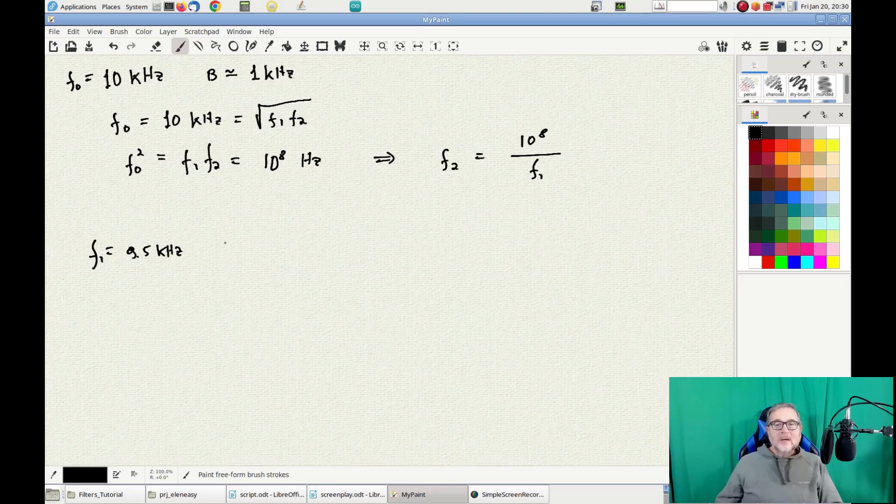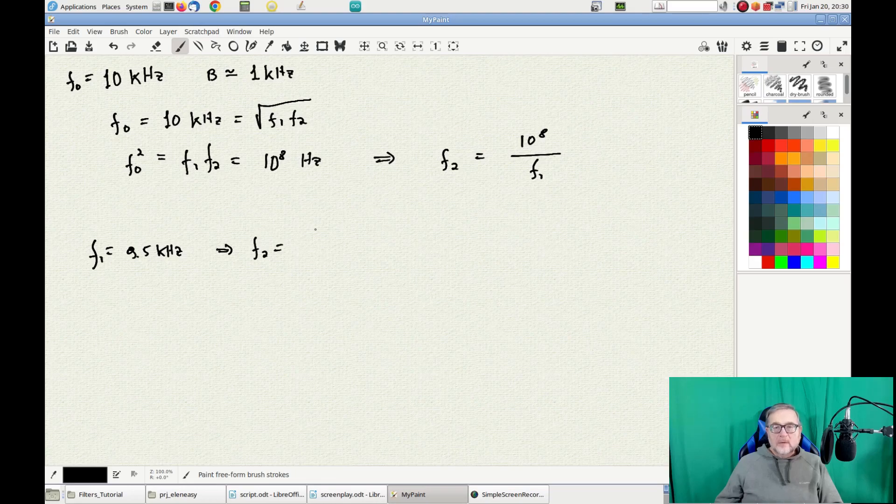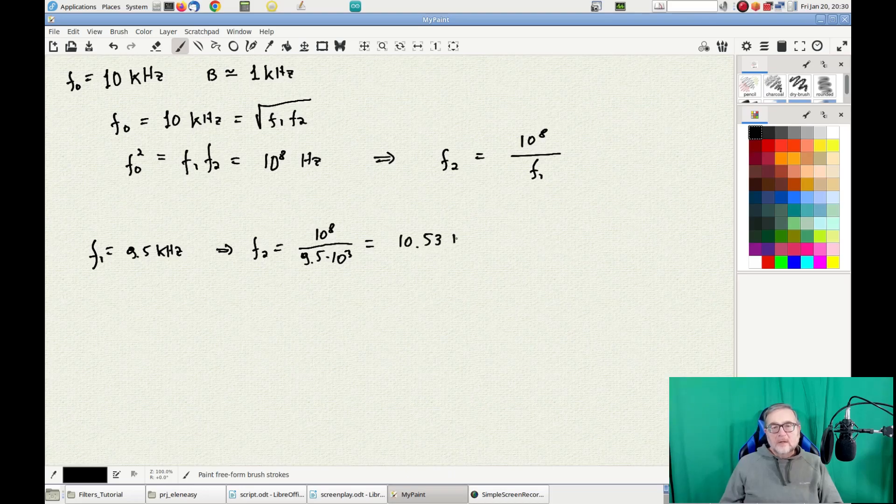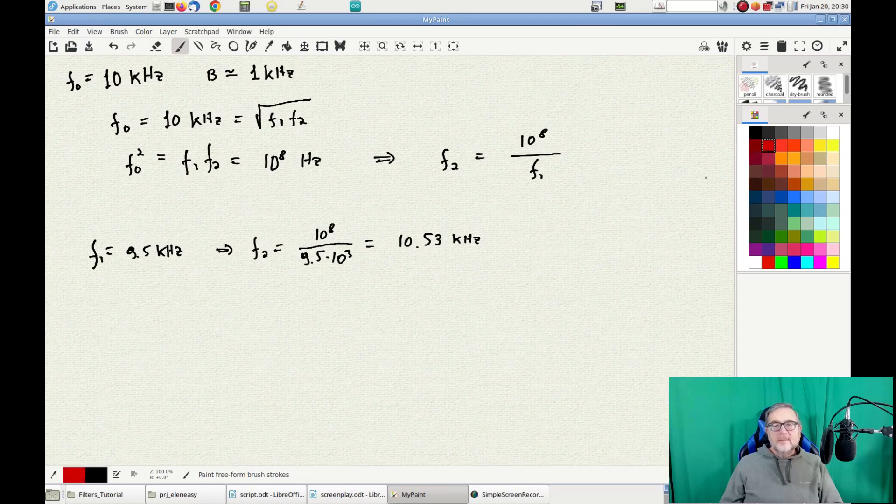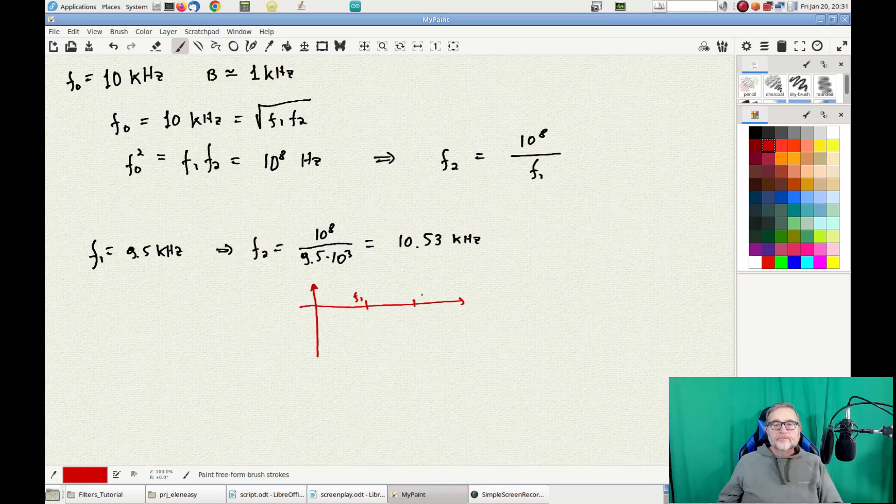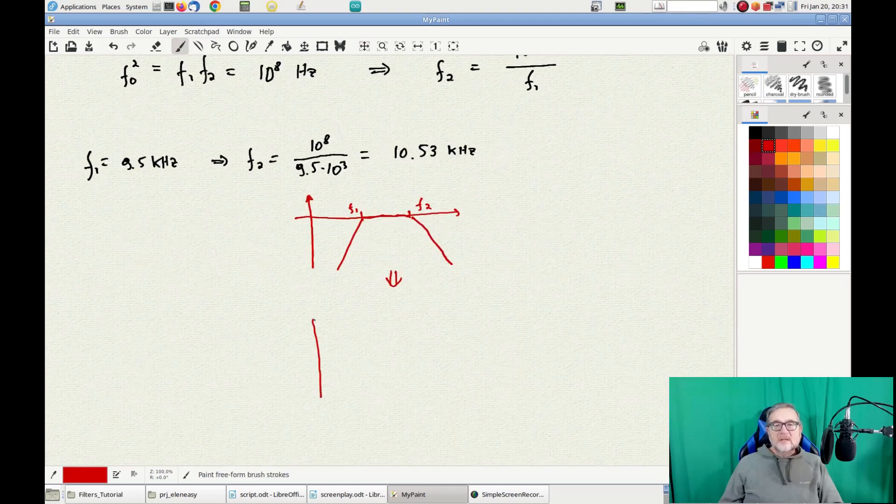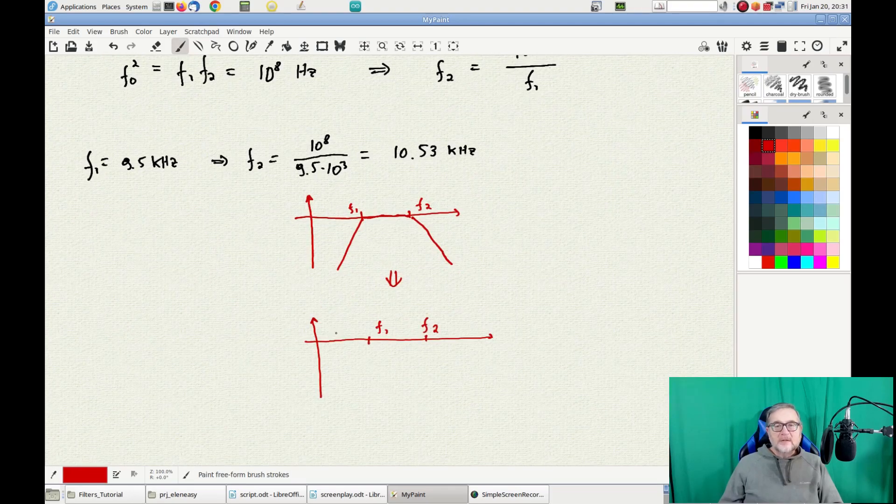Since we have said that we want the bandwidth of 1 kHz, let's fix the value of F1 to 9.5 kHz. From the previous equation we will have F2 equal to 10.53 kHz. F1 will be the cutoff frequency of the high-pass filter, F2 will be the cutoff frequency of the low-pass filter. So, basically we would have a Bode diagram with this kind of shape, and the inverting stage will transform the shape like this other one.